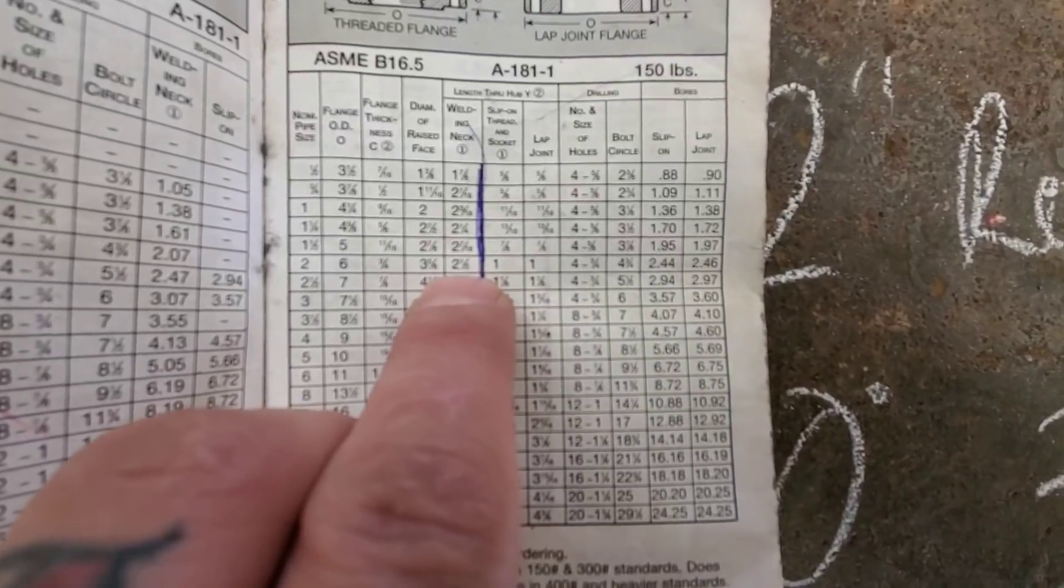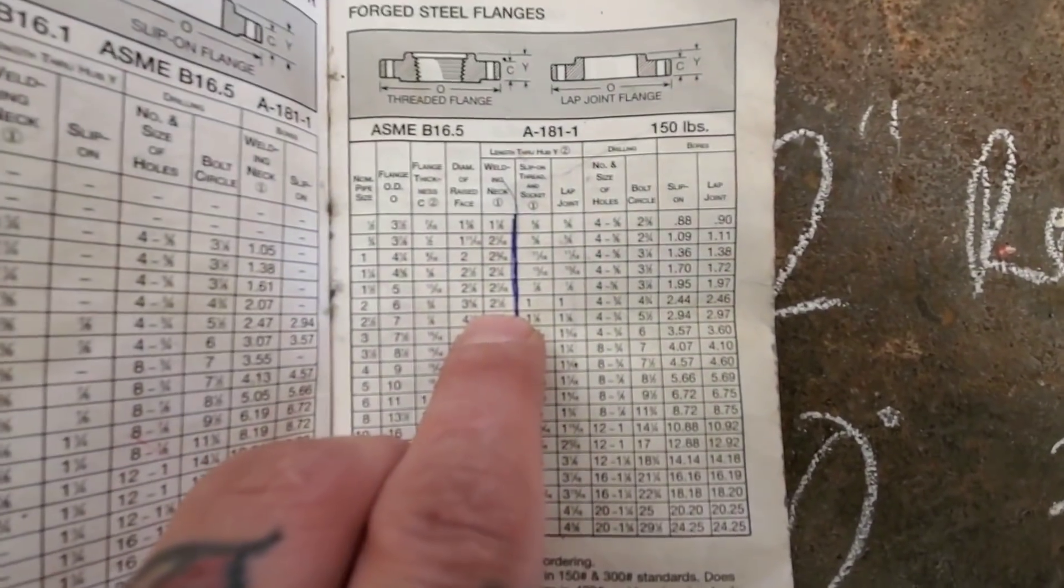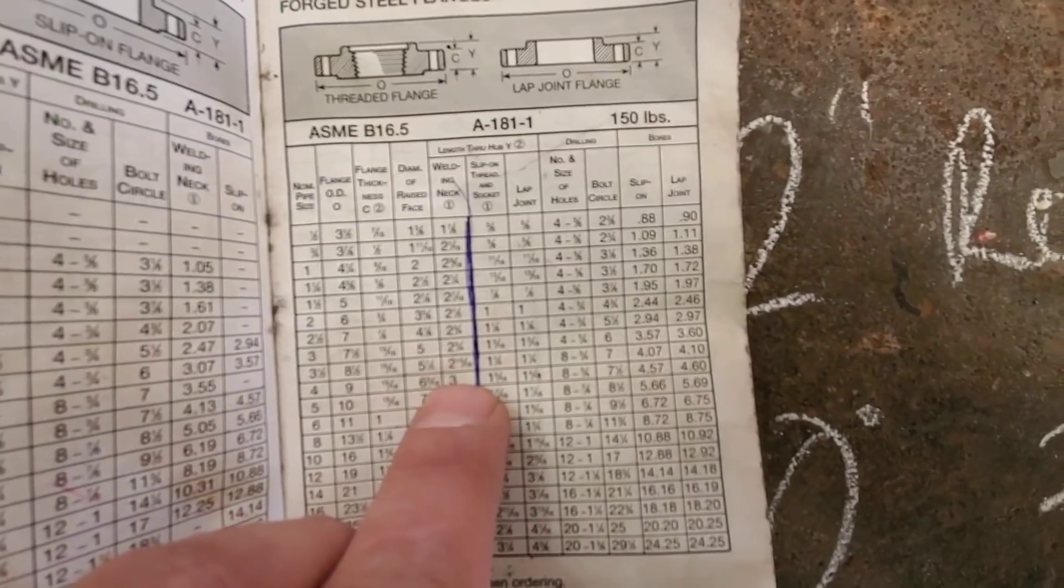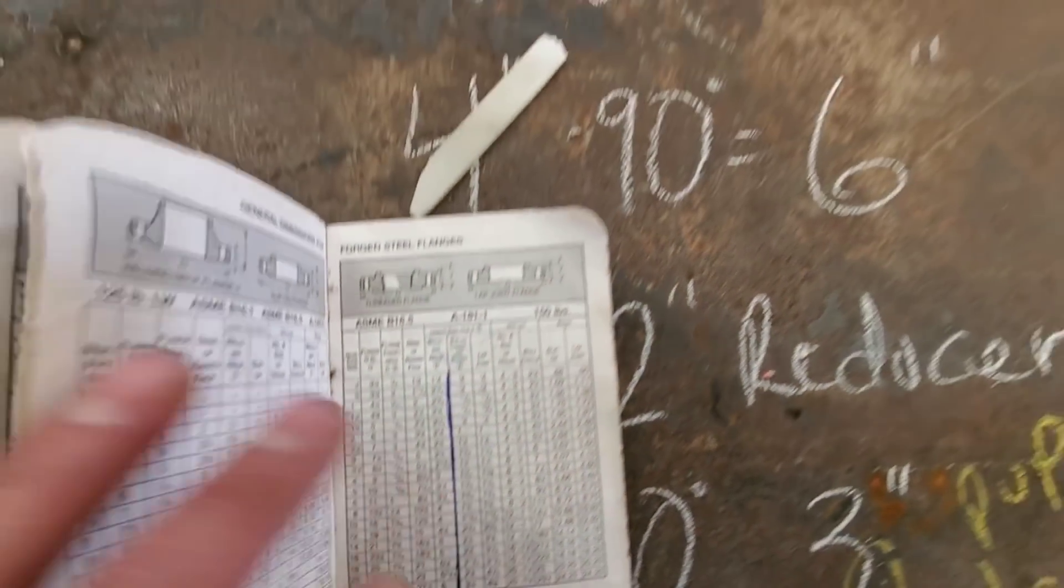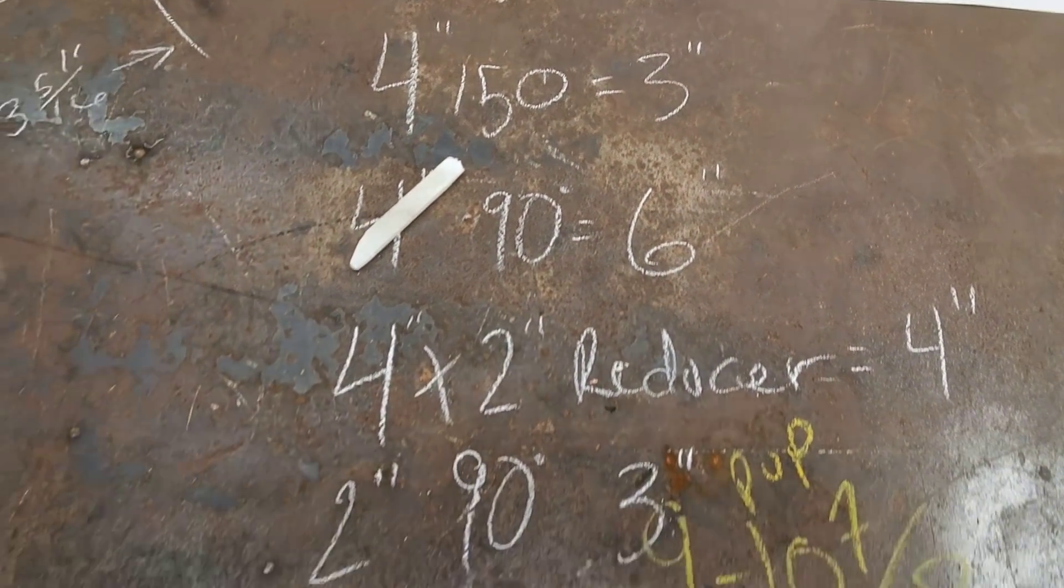It says it's two and a half inches for the two inch 150 flange. Pay attention to that, that's important. See what I got going on here. If you don't know who I am, I'm the weld professor.